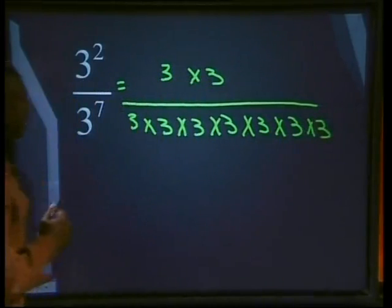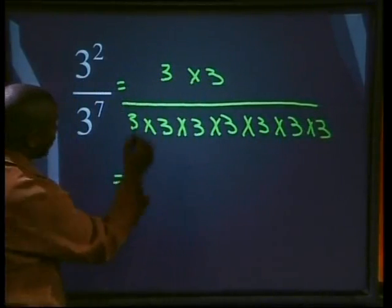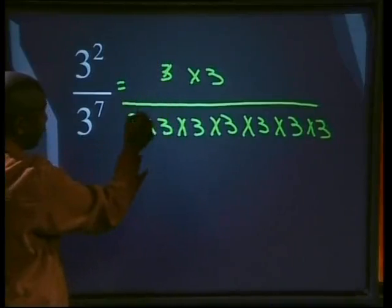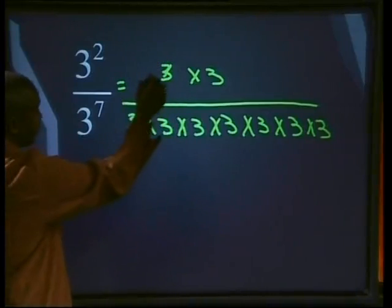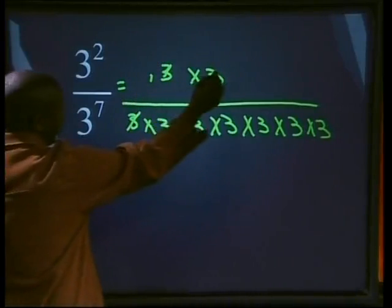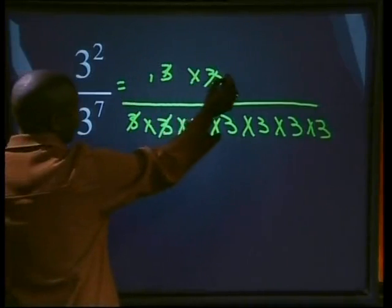Expanding gives us three times three in the numerator, divided by three times three times three times three times three times three times three in the denominator. We then cancel out: three into three is one, three into three is also one. So we have one times one, giving us one, over the remaining threes at the bottom.